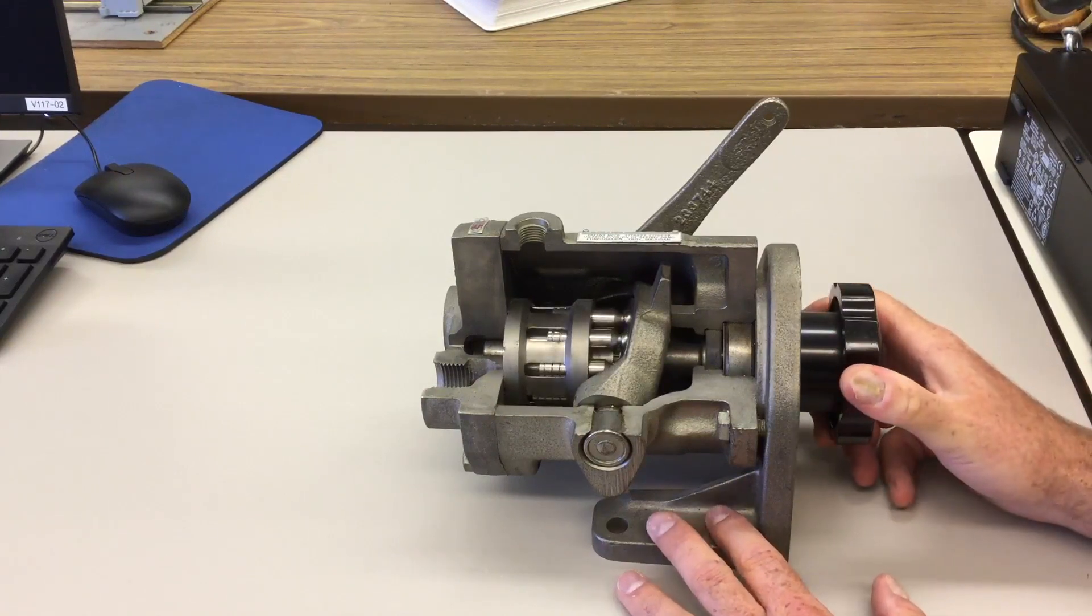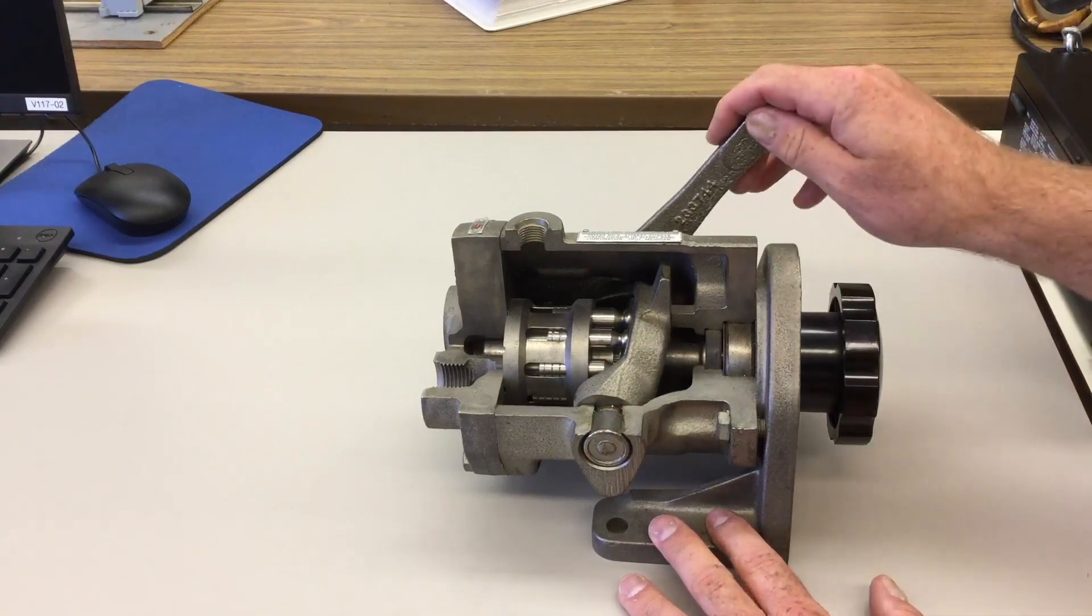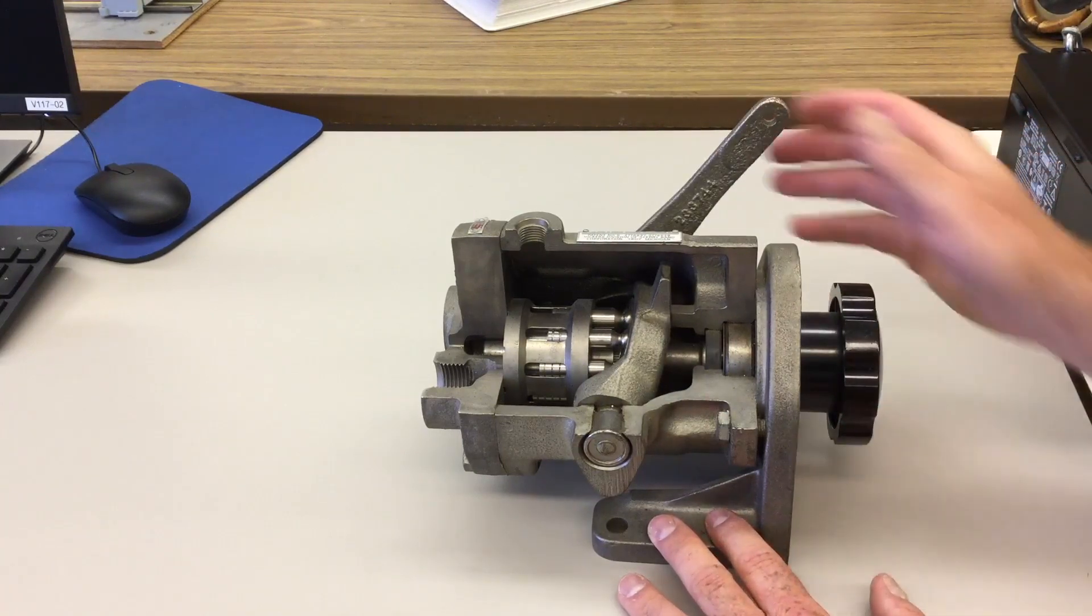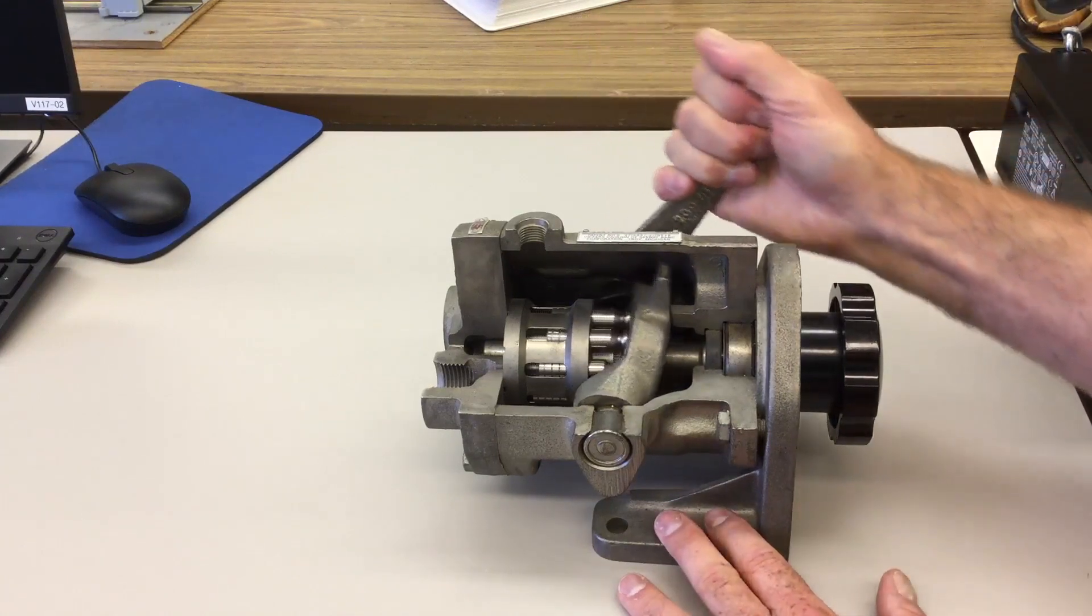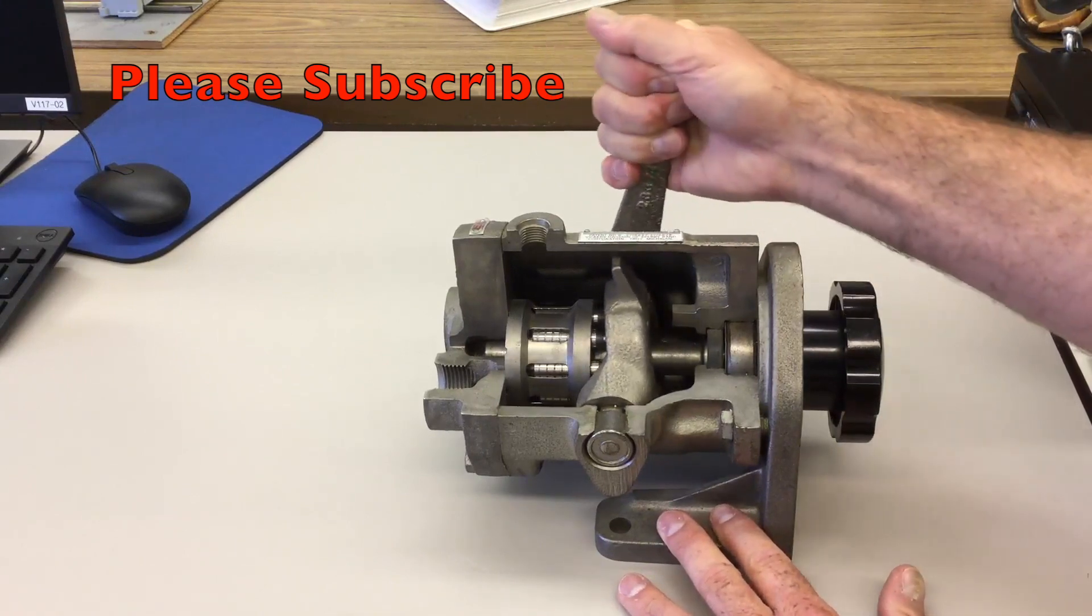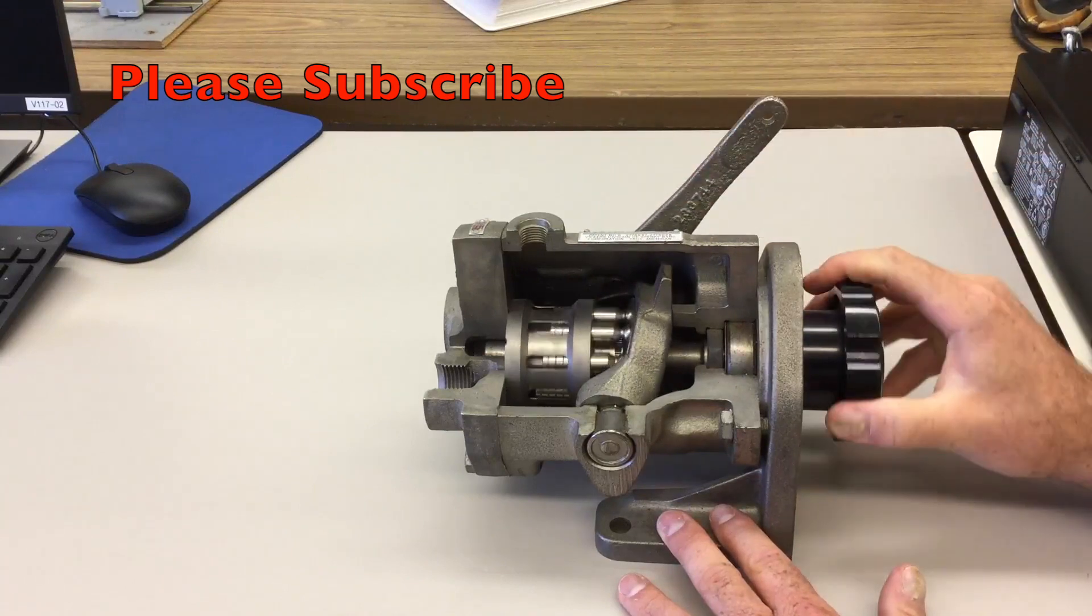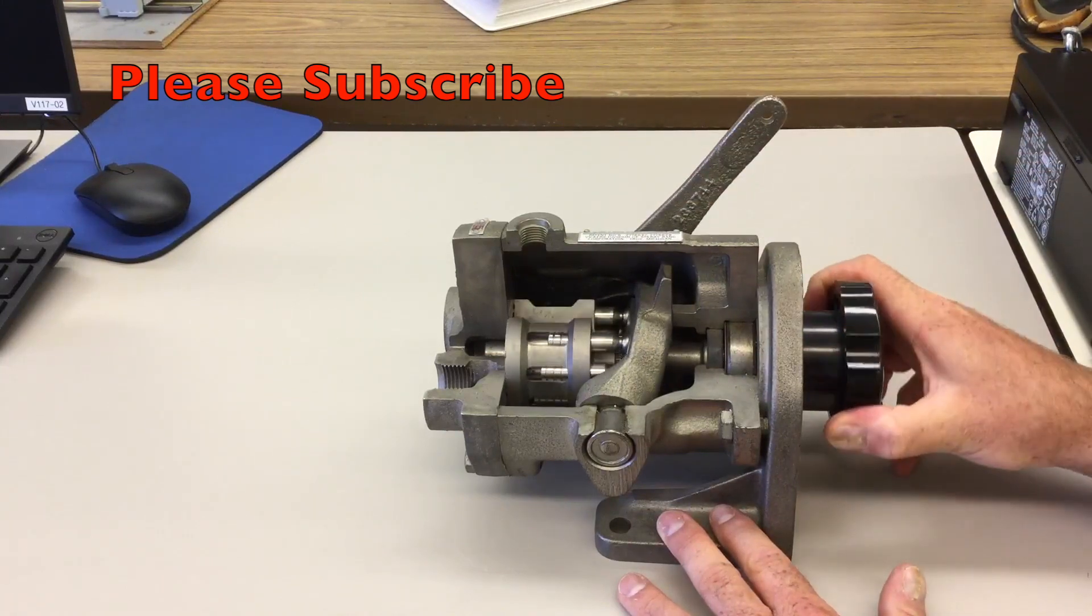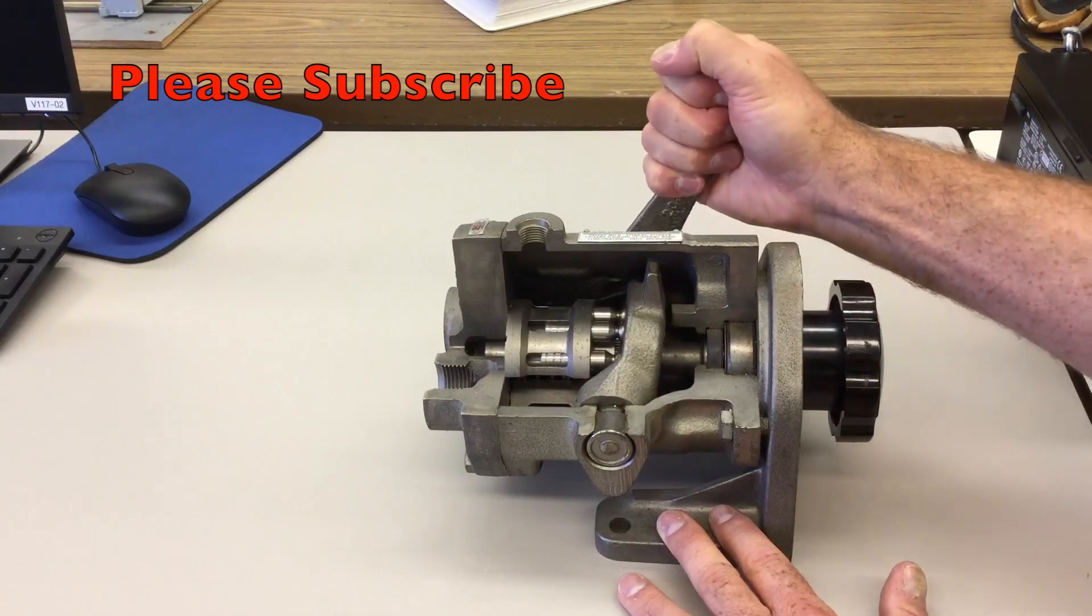Now if this was a fixed piston pump, this is exactly how it would work. But since this one's variable, we also have the ability to adjust the swash plate. This one can be done by hand, but there are a number of other mechanisms that can be used to do that. And so you can see how far these will be pulled back as they rotate.